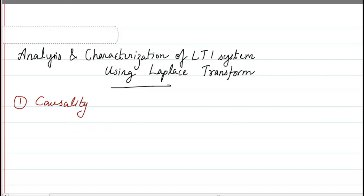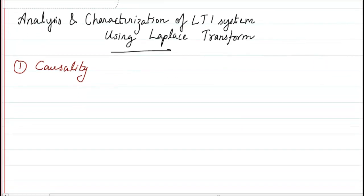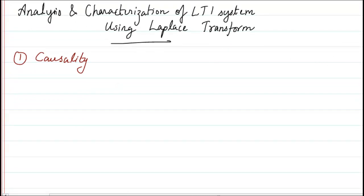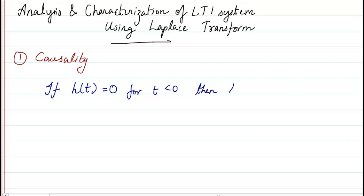Let us start with causality. We all know what a causal system is. A system is said to be causal if h(t) exists and h(t) is equal to 0 for t less than 0, then the system is causal.